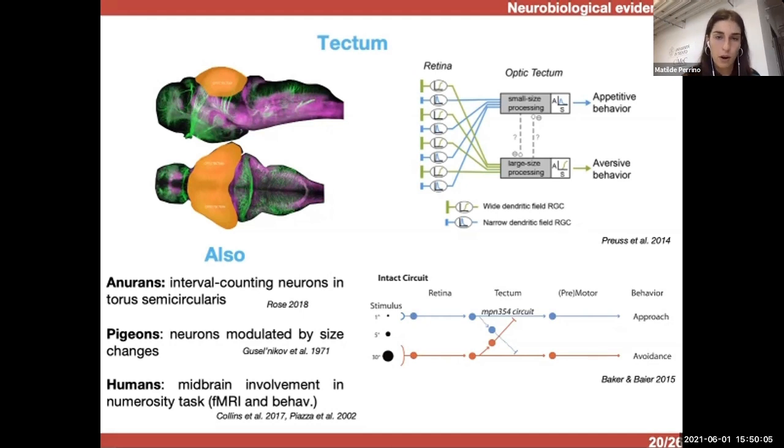So, different population of neurons were tuned to small or large objects, and these receptive fields were shaped through direct afferent input from the retinal ganglion cells. So, basically, depending on the dendritic field of retinal ganglion cells, if it was wide or narrow, it activated different population of neurons in the tectum that then elicited different type of behavior through connection with premotor neurons.